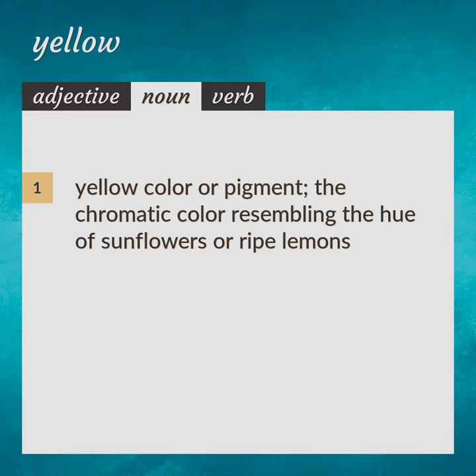Yellow color or pigment. The chromatic color resembling the hue of sunflowers or ripe lemons. Yellowness.